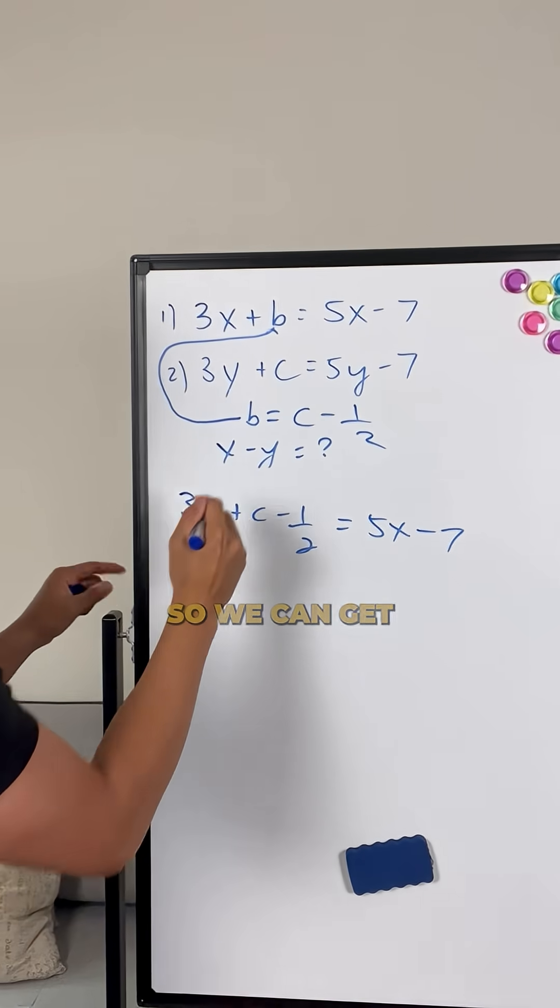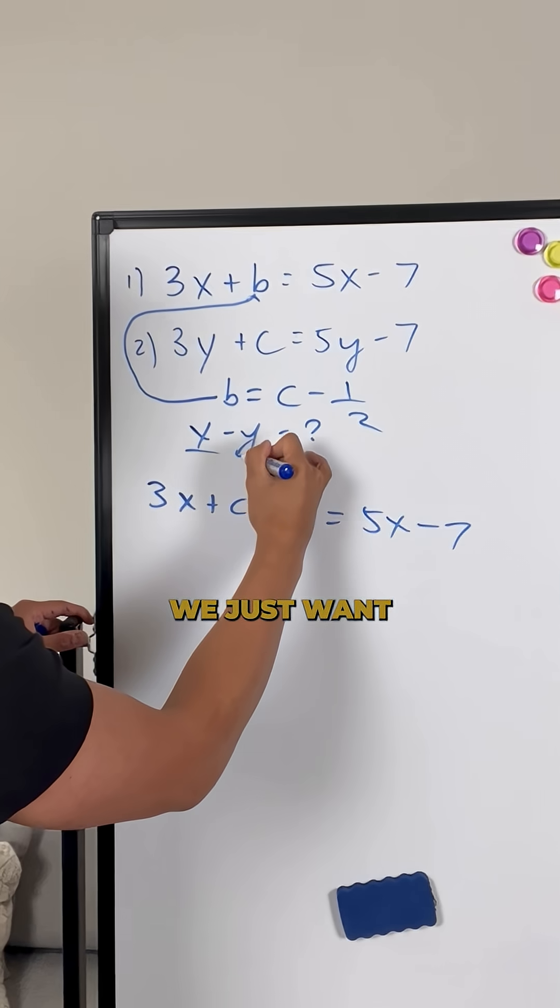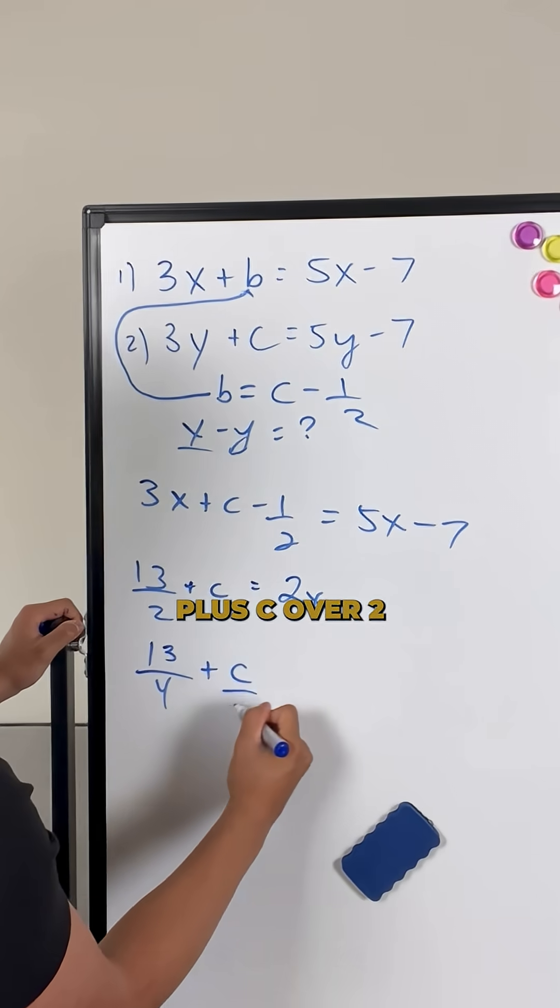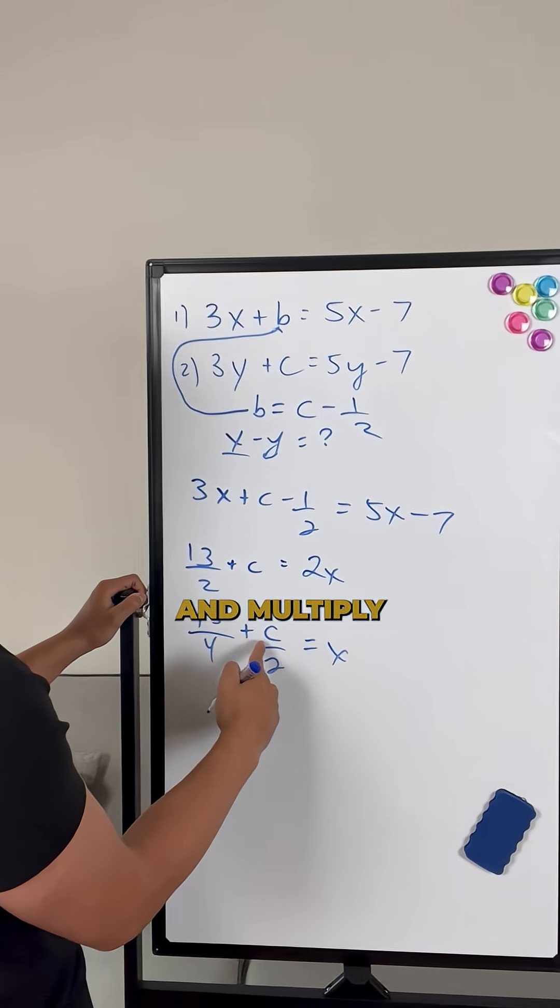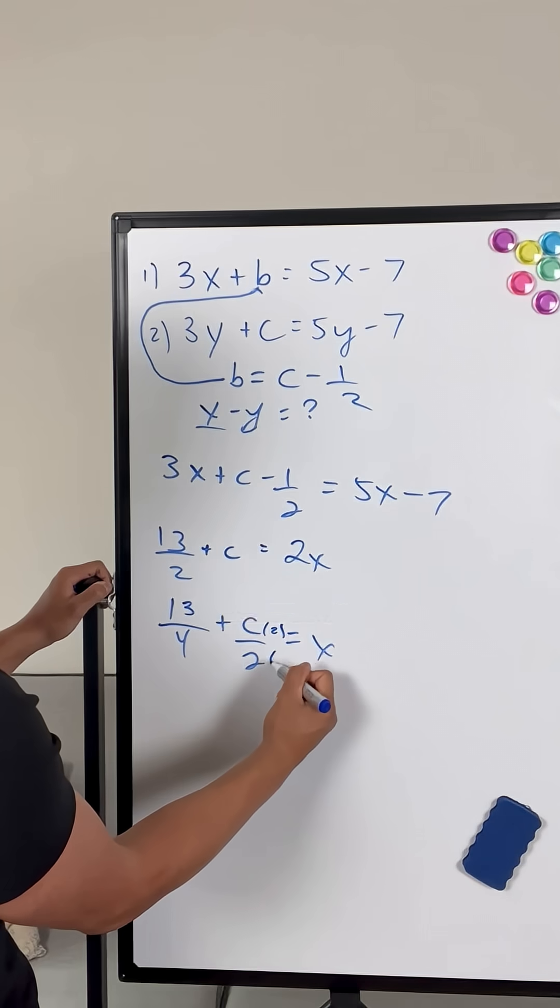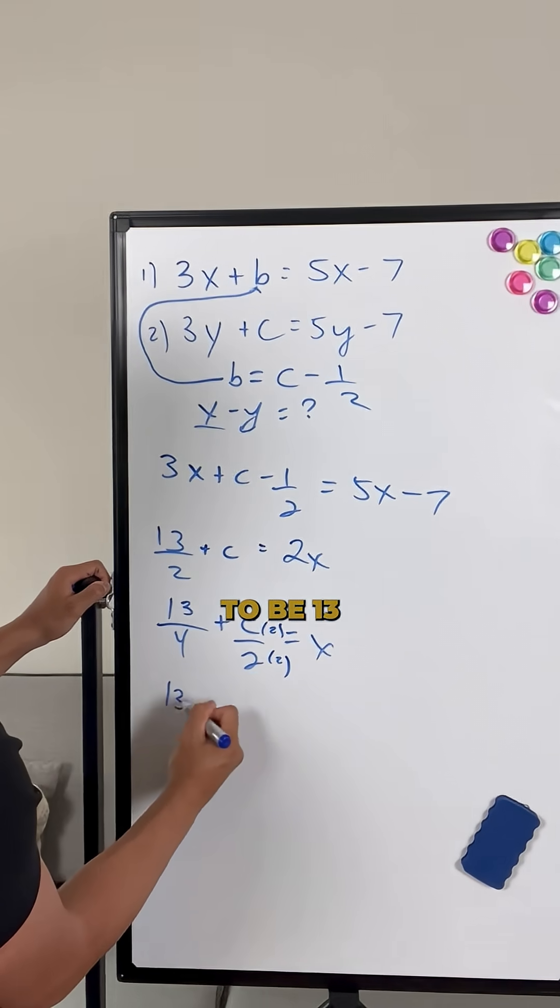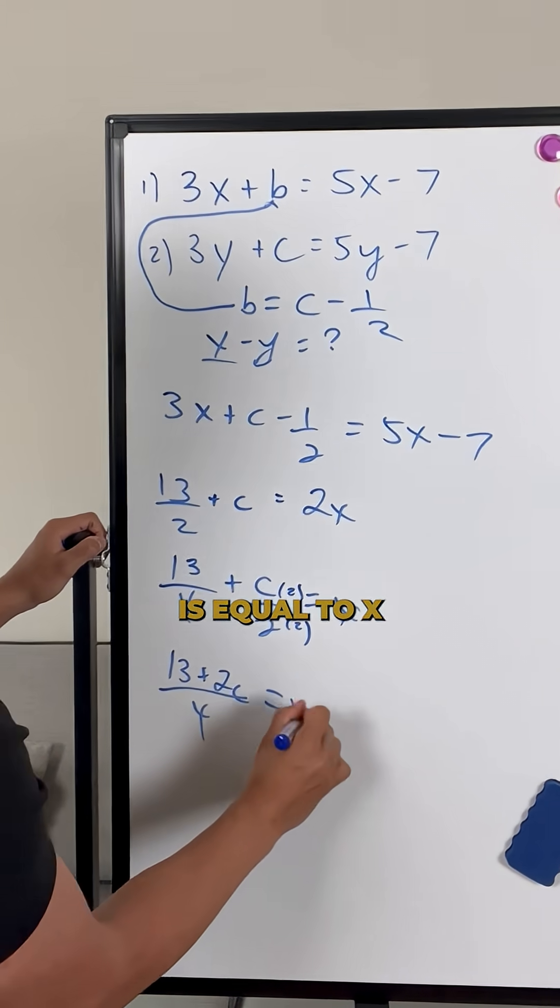Now all we want to do is just solve for x so we can get x by itself because remember we just want x minus y plus c over 2 is equal to x. And then all you're going to do now is you're going to go ahead and multiply this by 2 over 2 because of the LCD. So 2 over 2. That's going to be 13 over 4 is equal to x.